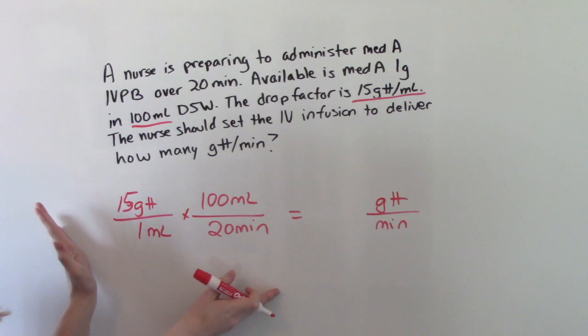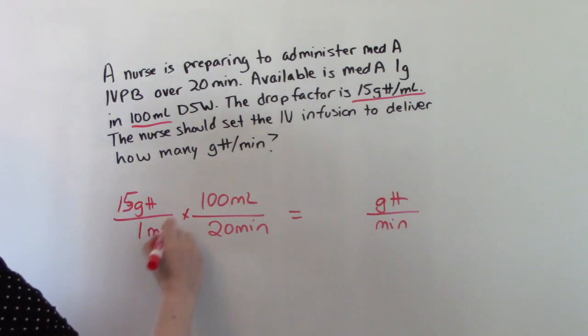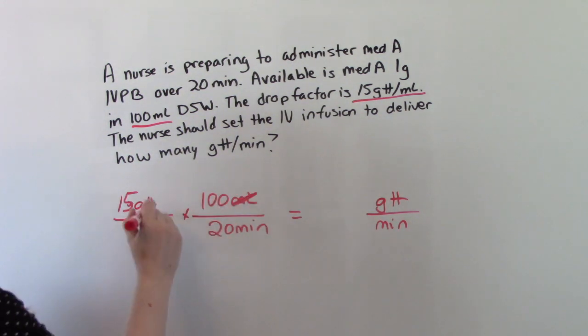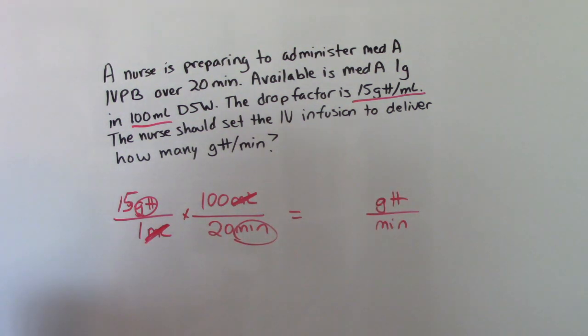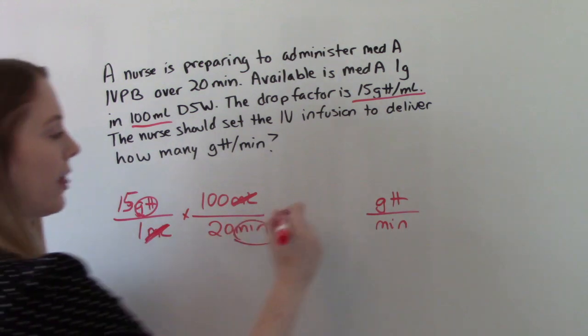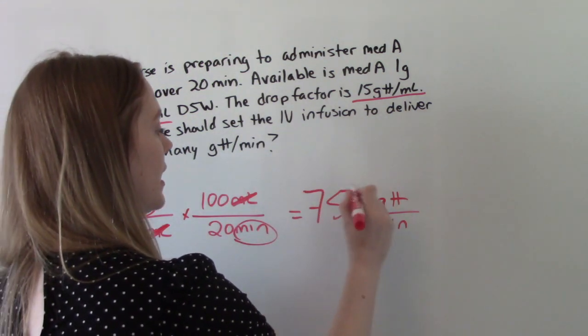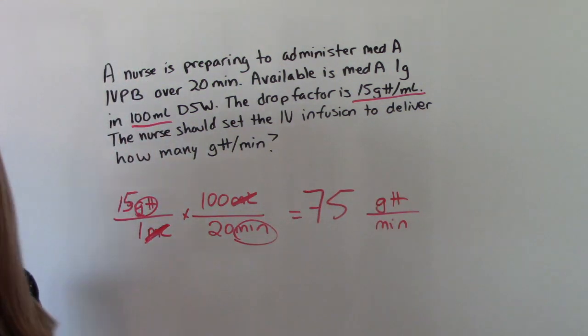So this is how you set up the equation. You'll cross out the ml's. We'll end up with drops on top and minutes on the bottom just like we want. Punch it in and do the math. And we get 75 drops per minute.